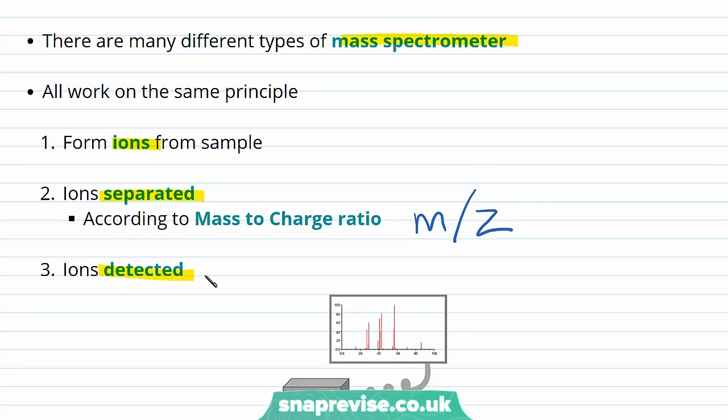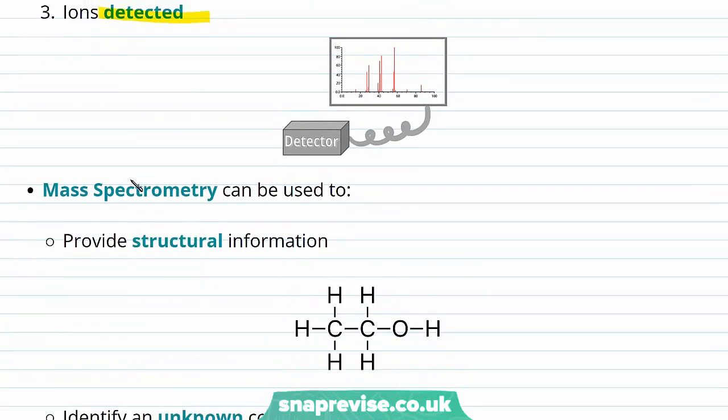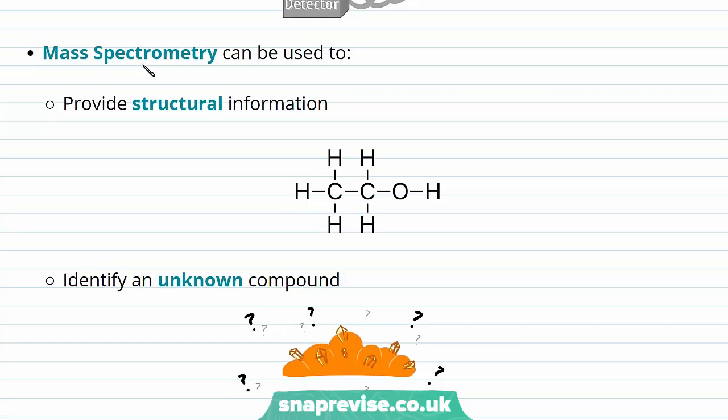The third step of the process is that the ions are detected and a spectra is produced. Now mass spectrometry is incredibly useful and that's because the spectra that's produced can be used to provide structural information.